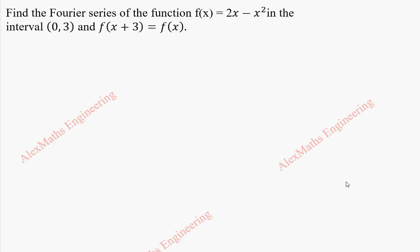Hi students, this is Alex here. In this video, we are going to find the Fourier series of the function f of x equals 2x minus x squared in the interval 0 to 3.